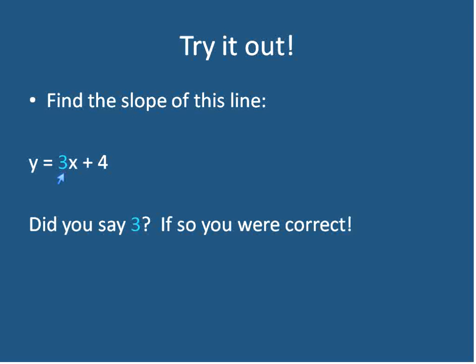Whatever's in front of x is your slope. It could be a negative. It could be a fraction. It could be anything. The number in front of x, not including the x. Our slope in this case is just 3, but whatever's in front of x, that's your slope.